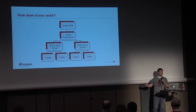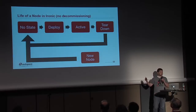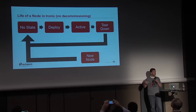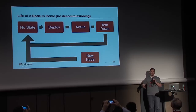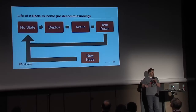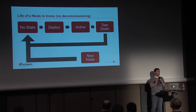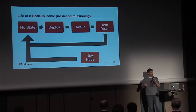How does a node actually get provisioned in Ironic? There's a state diagram. Nodes ready to be provisioned start in a 'no' state. When you call Nova boot, they move into a deploy state where the driver writes the image to the disk and gets a config drive on there. Once that's completed, it moves to an active state — that's where the tenant is on the node. When they call Nova delete, the node moves into the teardown state, which does some internal cleanup, then goes directly into a 'no' state.